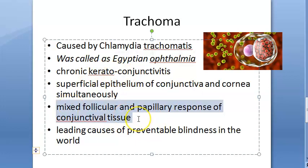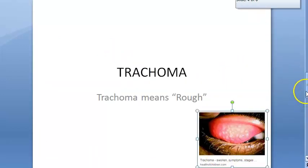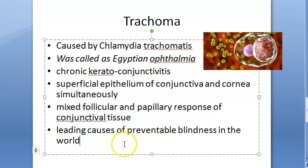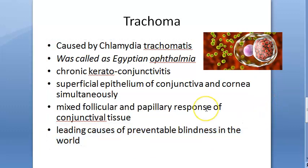Here you will see a mixed follicular and papillary response of the conjunctival tissue. This is why trachoma is so important — it is the leading cause of preventable blindness in the world.